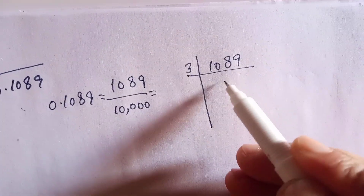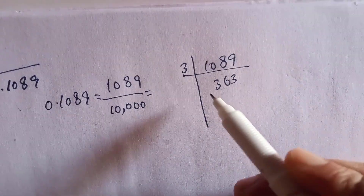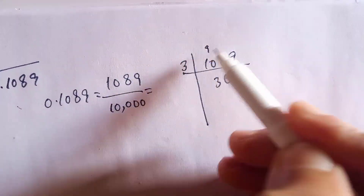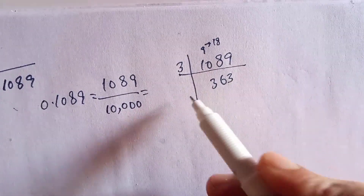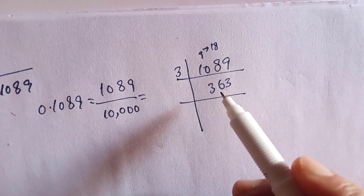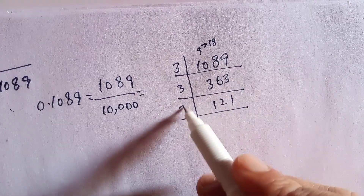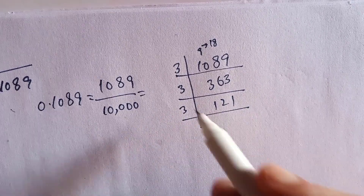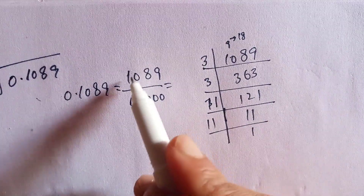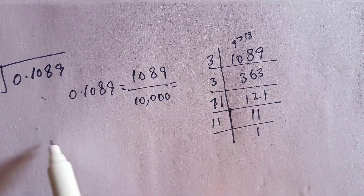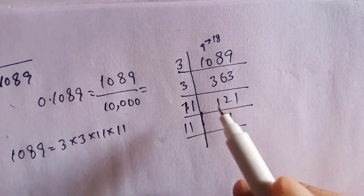1089 can be divided by 3: 3 times 363 equals 1089. 363 can be divided by 3 again: 3 times 121 equals 363. 121 cannot be divided by 3, so we divide by 11: 11 times 11 equals 121. So 1089 as a product of its prime factors is 3 times 3 times 11 times 11.